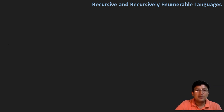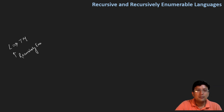मान लीजिए कि आपके पास एक language L है, और इस language के लिए एक Turing machine exist करती है — इसका मतलब है कि हम इसके लिए एक Turing machine बना सकते हैं। तो जो language L है, उसको हम कहेंगे कि that is recursively enumerable. Recursively enumerable language वो होगी जिसके लिए एक Turing machine बन सकती है।